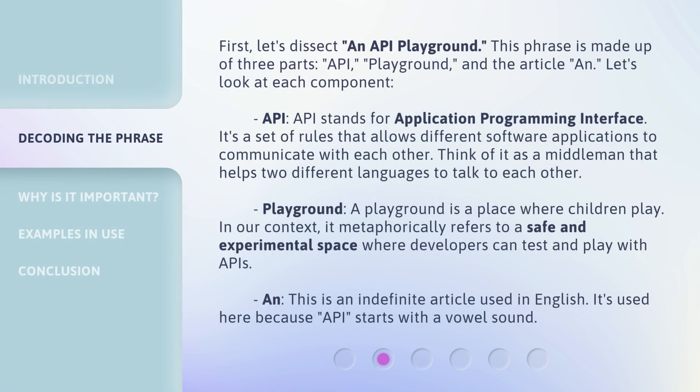First, let's dissect "an API Playground." This phrase is made up of three parts: API, Playground, and the article AN. Let's look at each component. API stands for Application Programming Interface. It's a set of rules that allows different software applications to communicate with each other. Think of it as a middleman that helps two different languages to talk to each other.